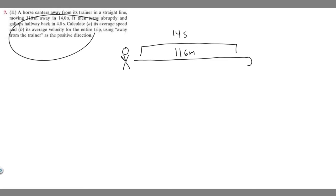And then it gallops halfway back in 4.8 seconds. So we just estimate what half is like. This looks to be about half. We know it does this in 4.8 seconds. So what we want to do first is find this distance here. And so we know that it's half of this distance, right? It goes this way and then halfway back.